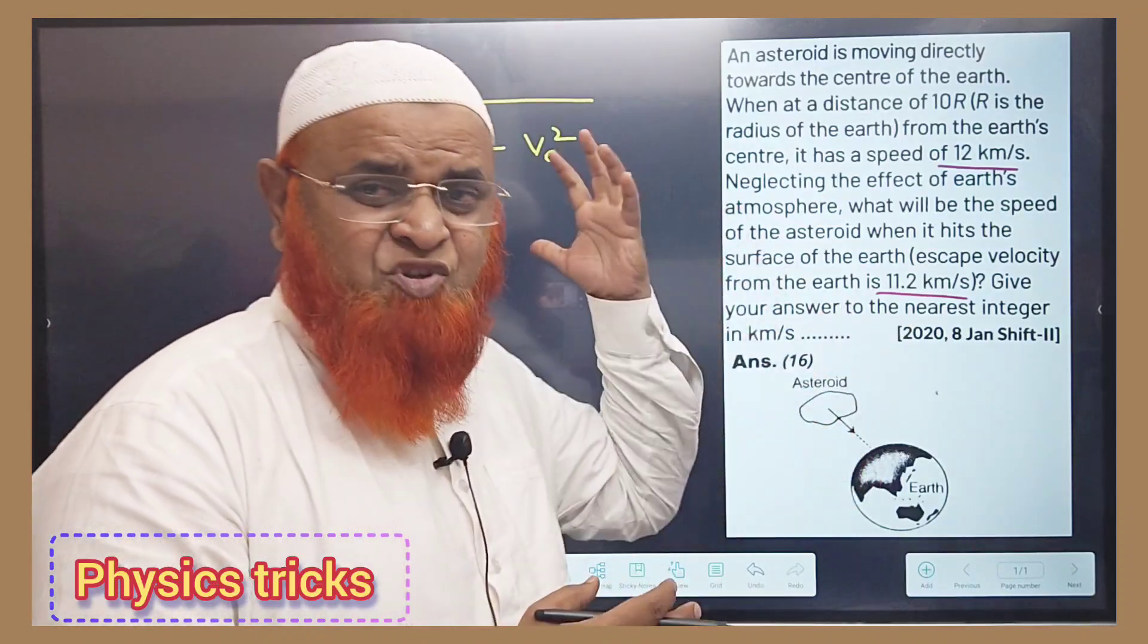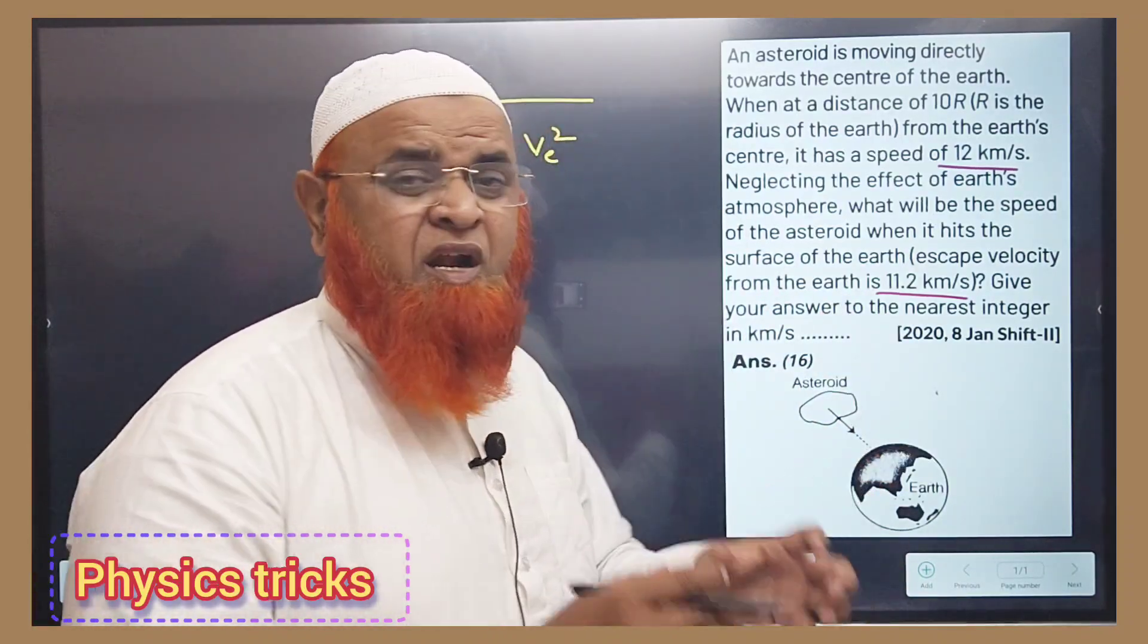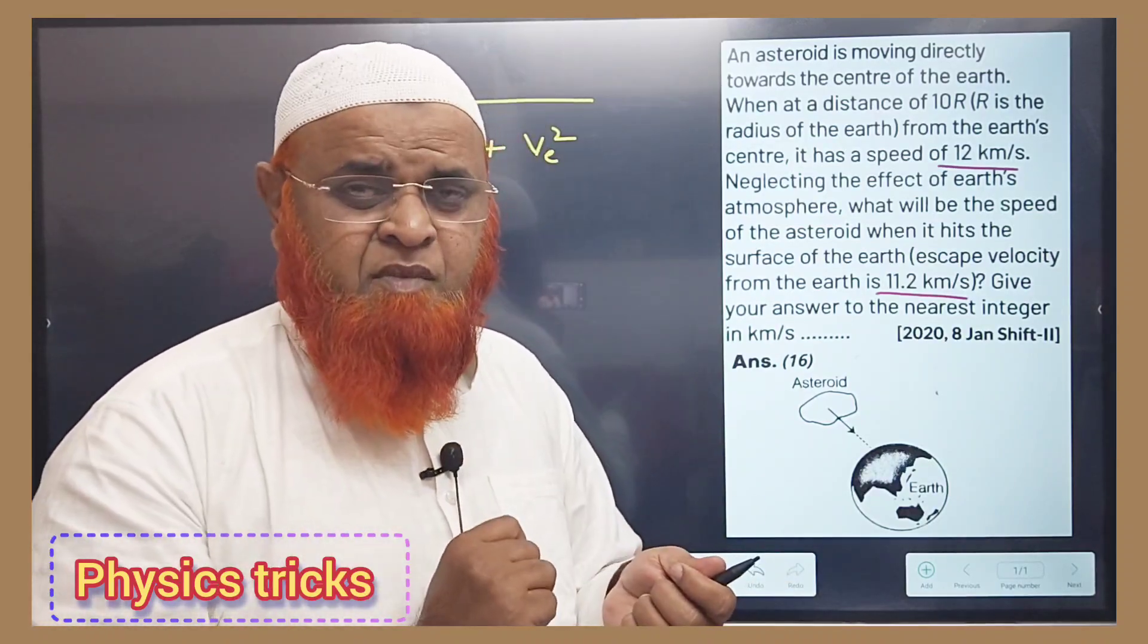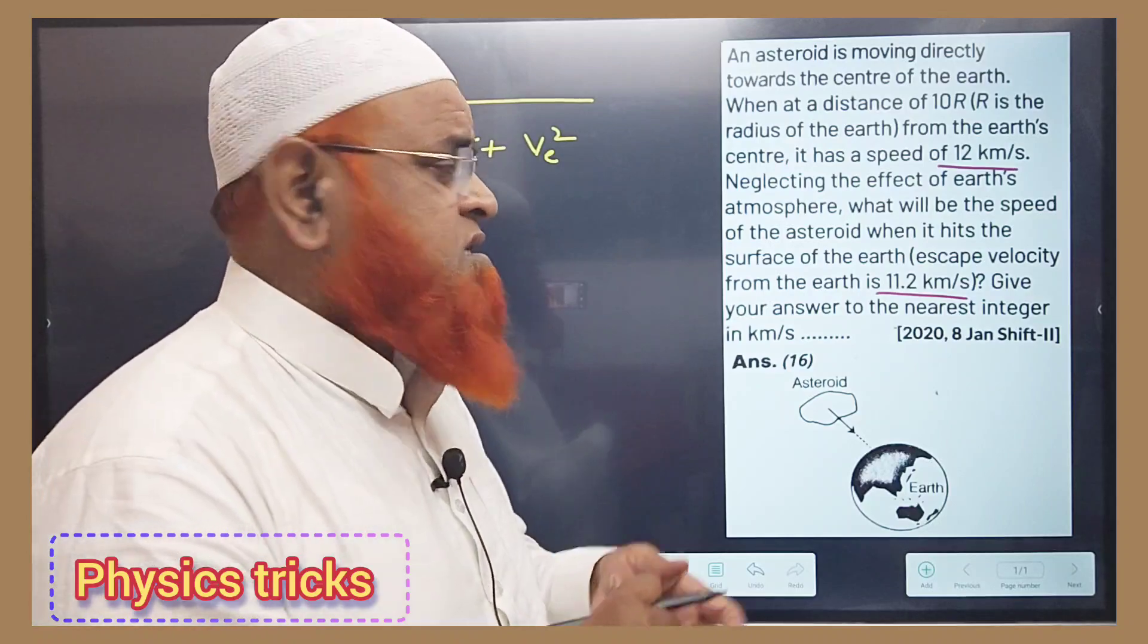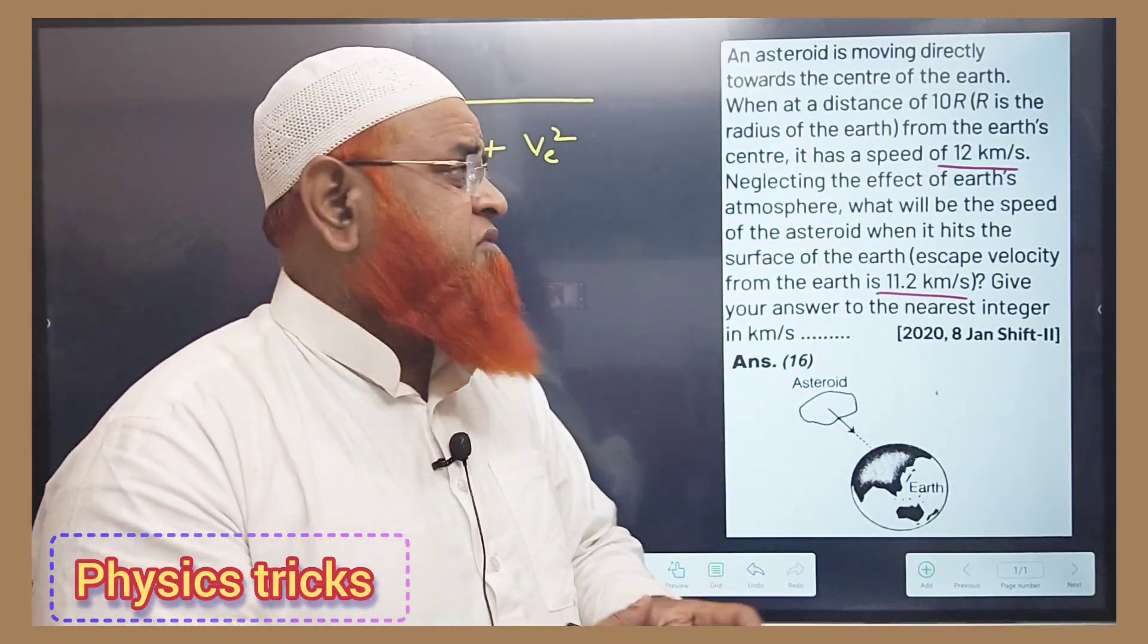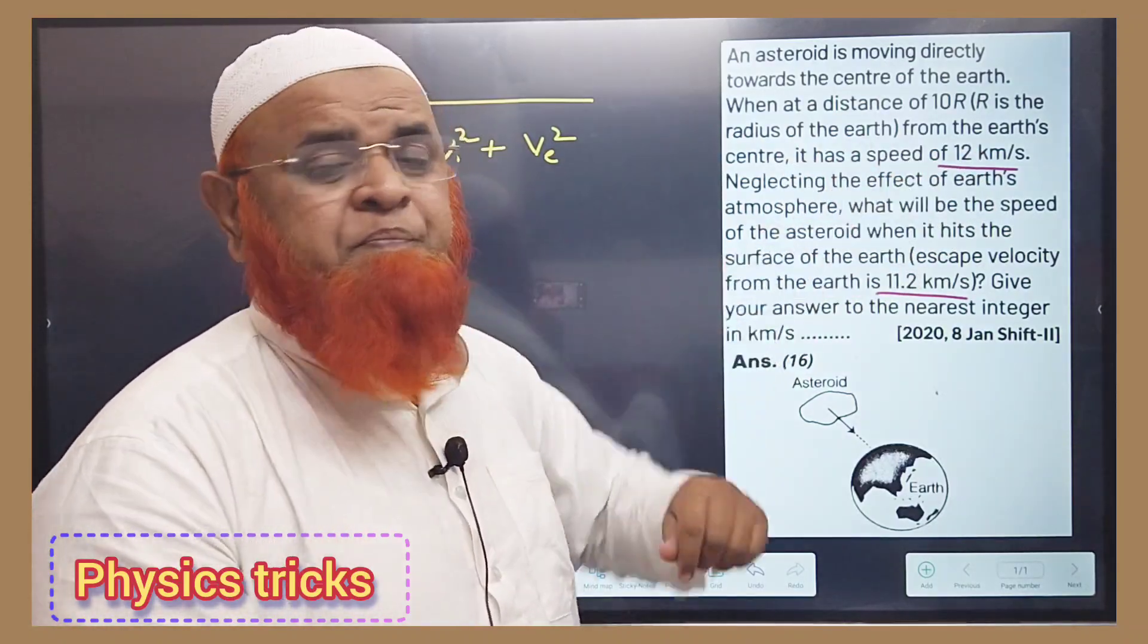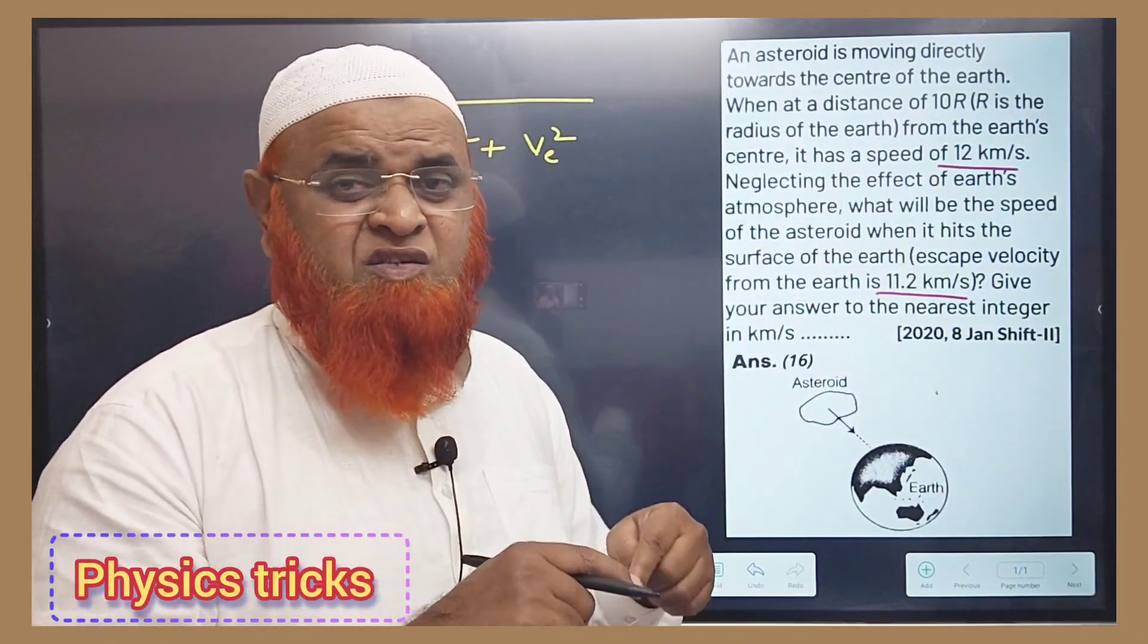Whenever an asteroid falls on the earth, what is the speed with which it strikes the earth? The simple shortcut formula for these types of problems - they will give you the orbital velocity as well as escape velocity.